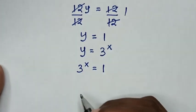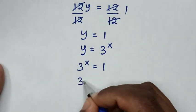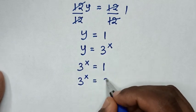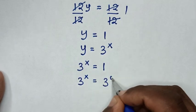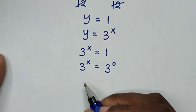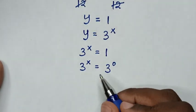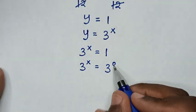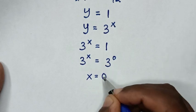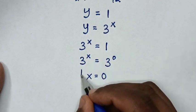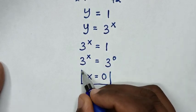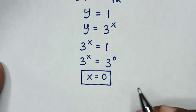So 3^x is equal to 1, which is the same as 3^0. Because we have the same base, we compare the powers, so x is equal to 0. This is the final answer for the value of x in this problem.